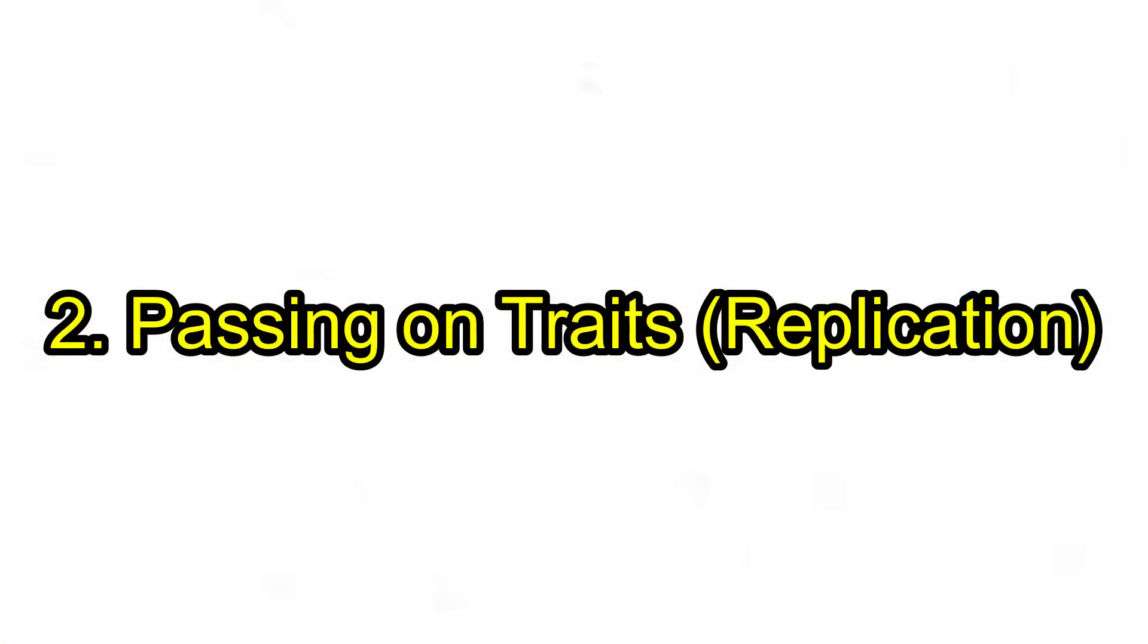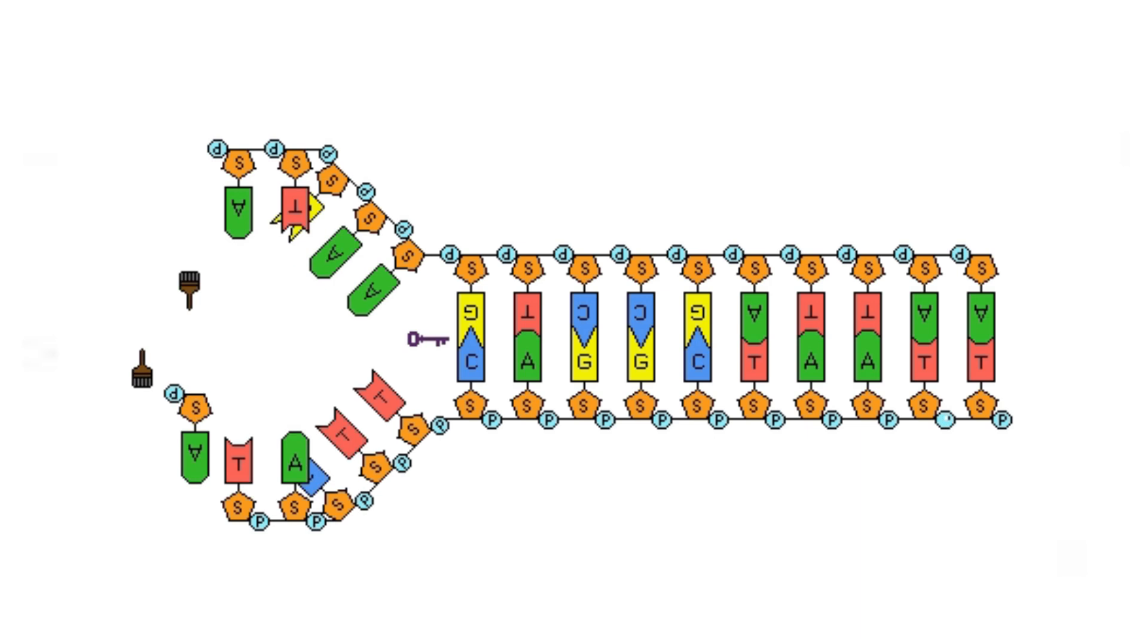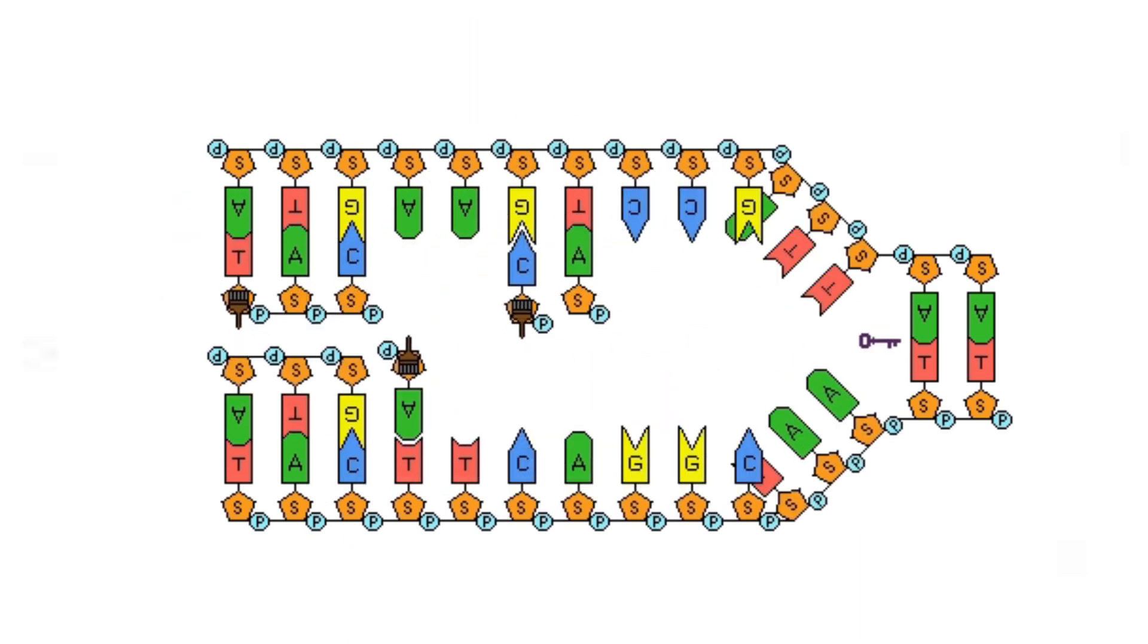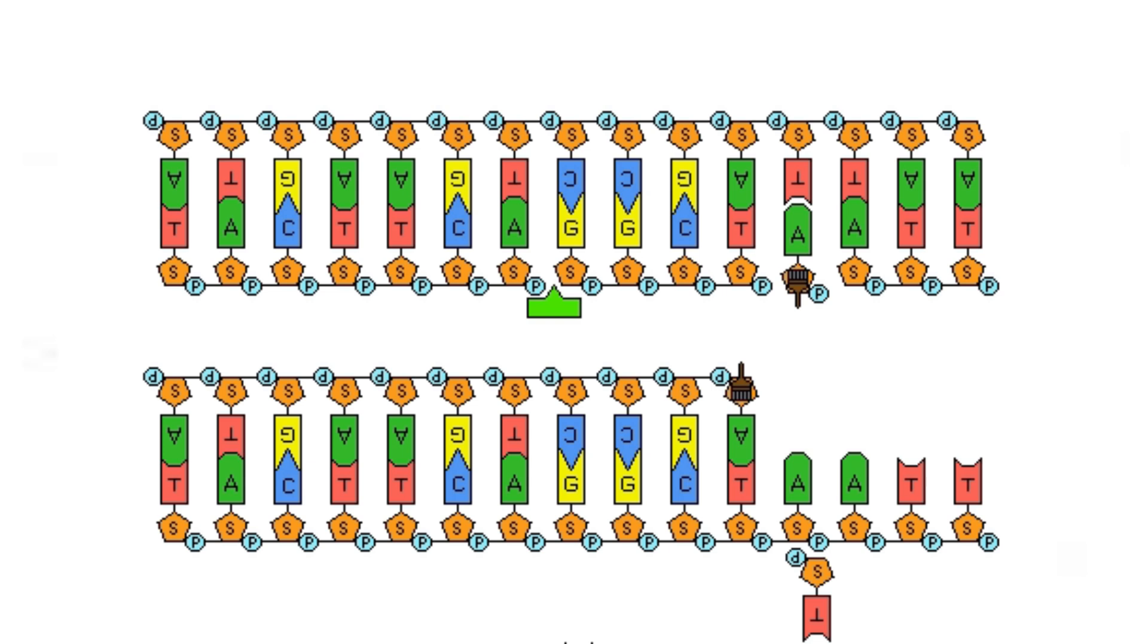Two, passing on traits, replication. When cells divide, DNA is copied, so each new cell gets the same genetic instructions. This is how traits are inherited from parents to offspring.